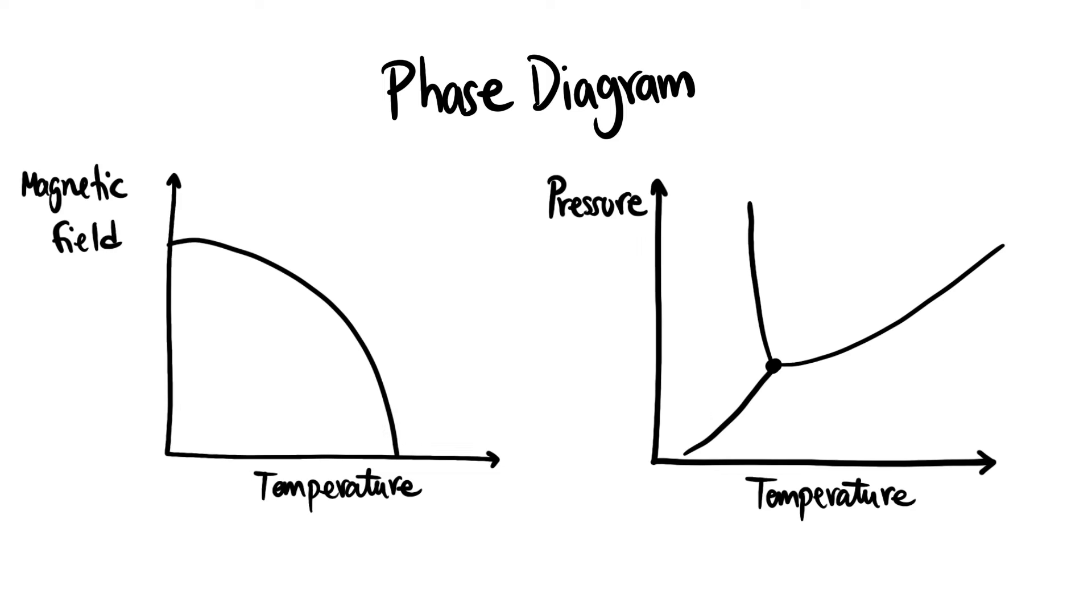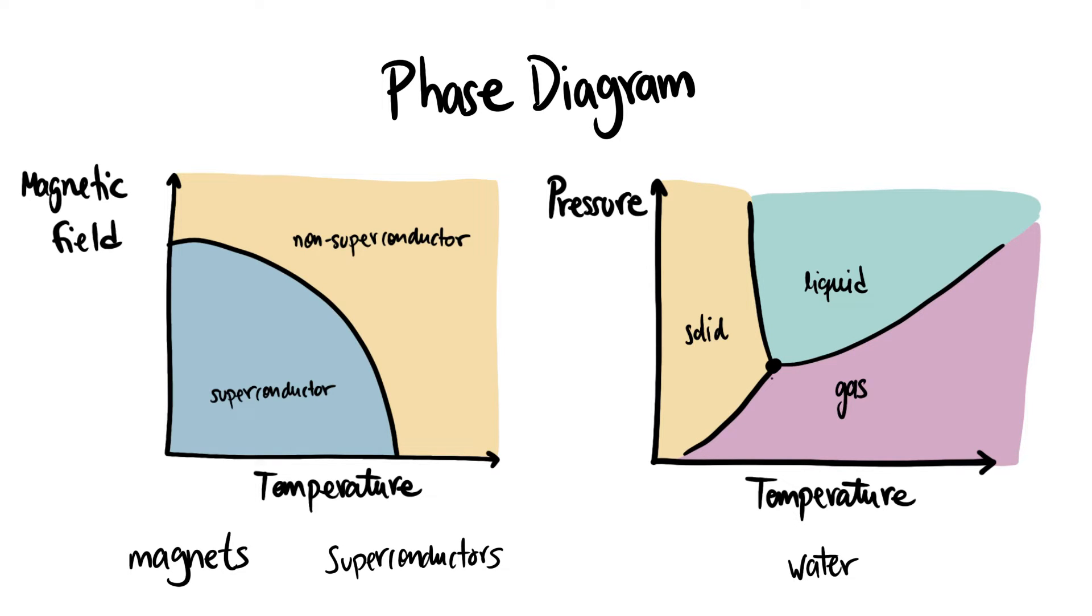A powerful tool to study mixing processes is a phase diagram. These diagrams are generally used all across physics, from magnets and superconductors to pure substances like water. Each system has its unique phase diagram which shows regions that correspond to different states of the system, such as the solid, liquid and gas states of water.